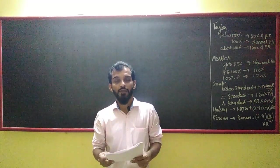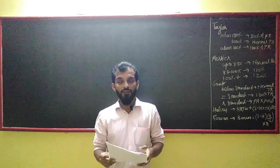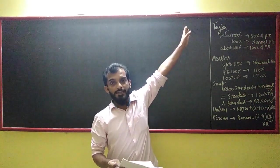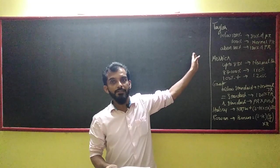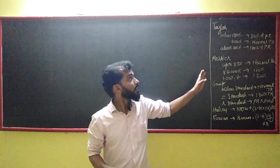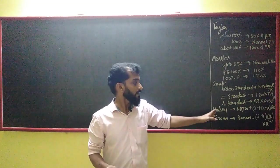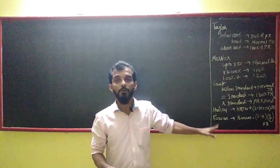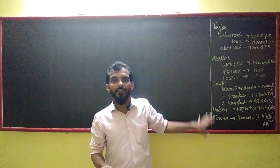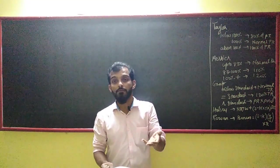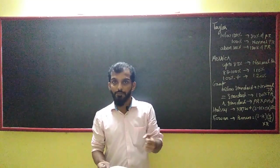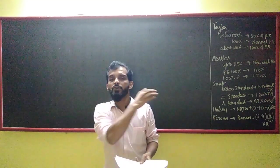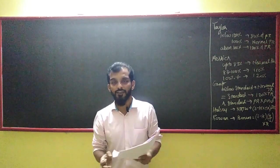This is a formula-based topic, and in your exams you are only tested on those formulas written on the board. There are 5 patterns: 1. Taylor, 2. Merrick Piece Rate, 3. Gantt, 4. Halsey and Rowan. These are the only 5 categories on which questions on labour and the labour cost statement will be asked.